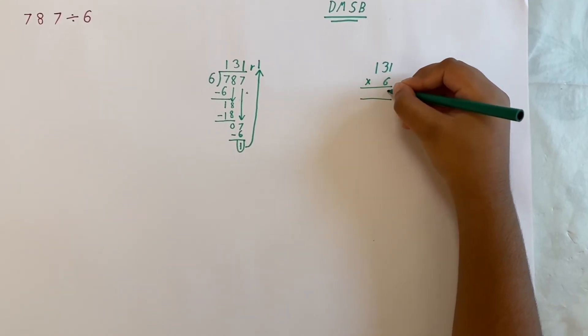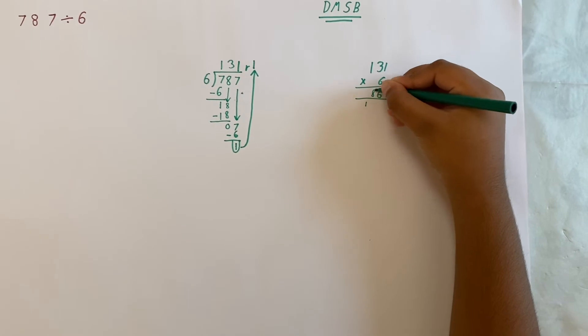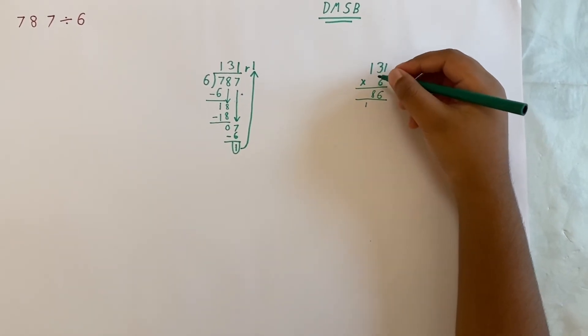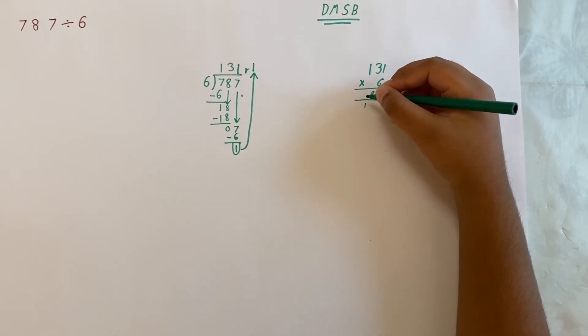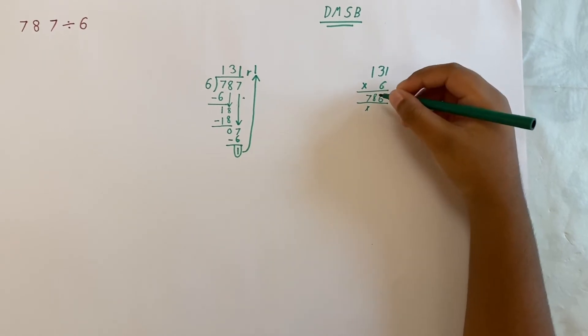Now, 1 times 6 is 6. 3 times 6 is 18. Put down the 8, put down the 1. 1 times 6 is 6, add the 1, it's 7.